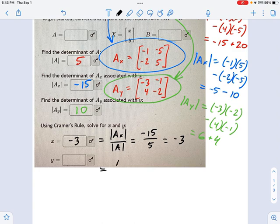For Y, it's going to be the determinant of AY divided by the determinant of A, which is 10 divided by 5, which is 2. There we go, that's Cramer's rule.